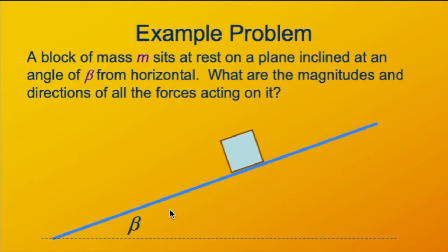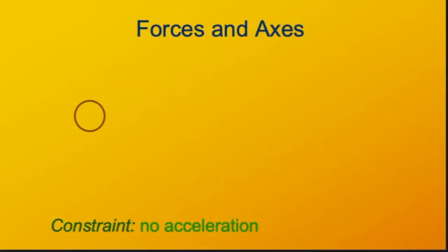We're asking what are all the forces acting on it. We know that since this is at rest, the net force has to be zero — it's mechanical equilibrium. So this is a statics problem, or a Newton's first law problem. Our next step with any statics problem is to inventory the forces, and recall that our constraint is that there's no acceleration. So what forces do we have acting on this block?